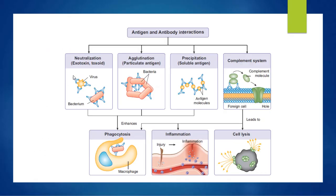These are the various forms of antigen and antibody interactions. The first one is agglutination. Bacteria, which is the antigen, combines with Y-shaped antibody molecules, and an agglutination process occurs with the antigens.